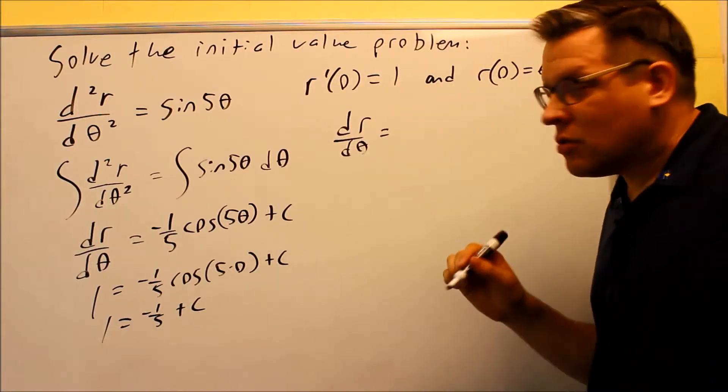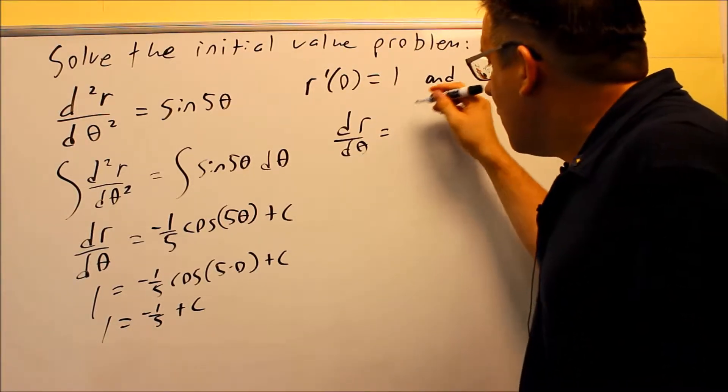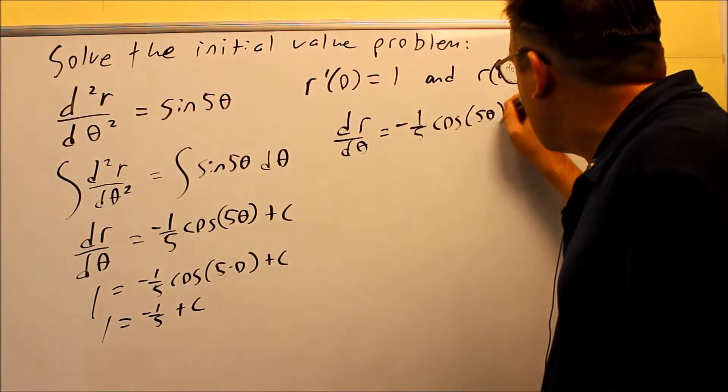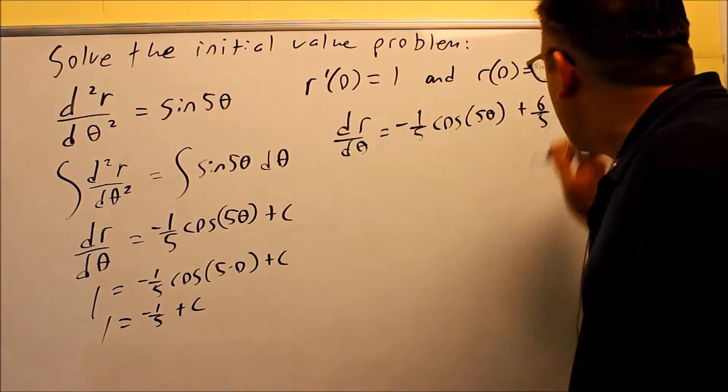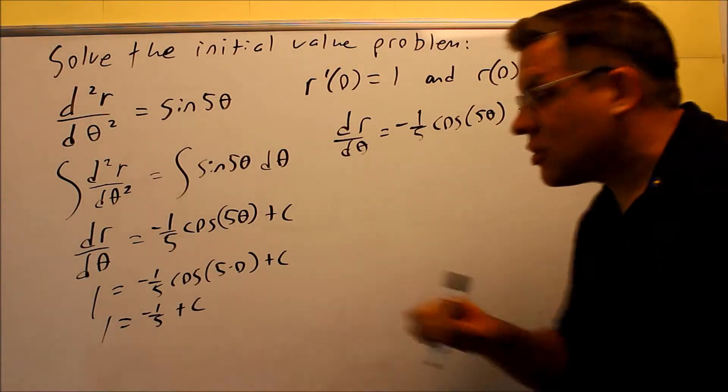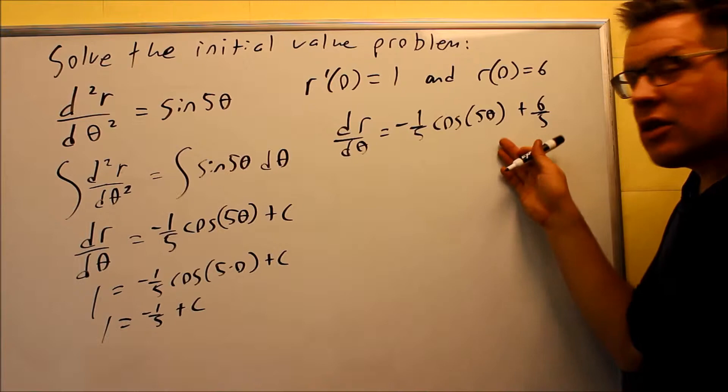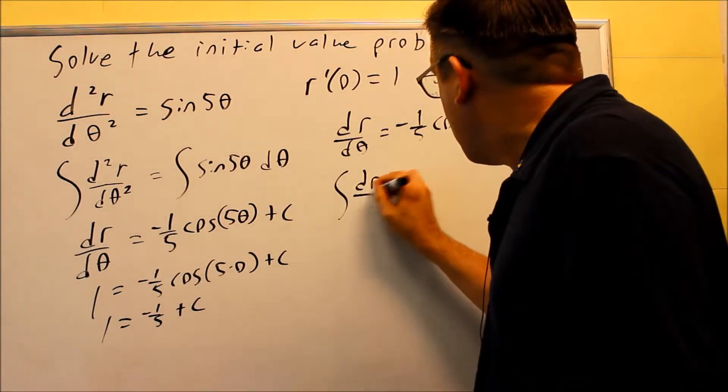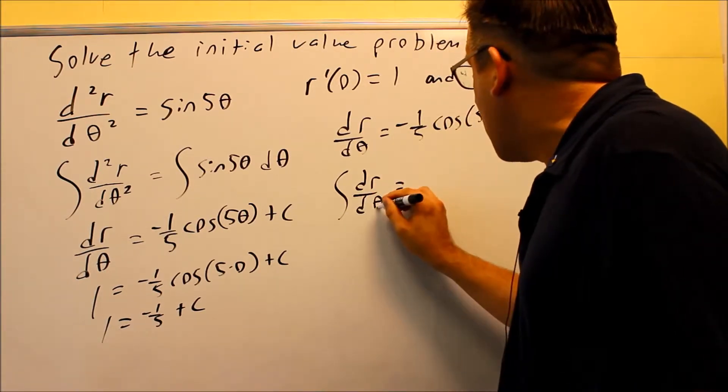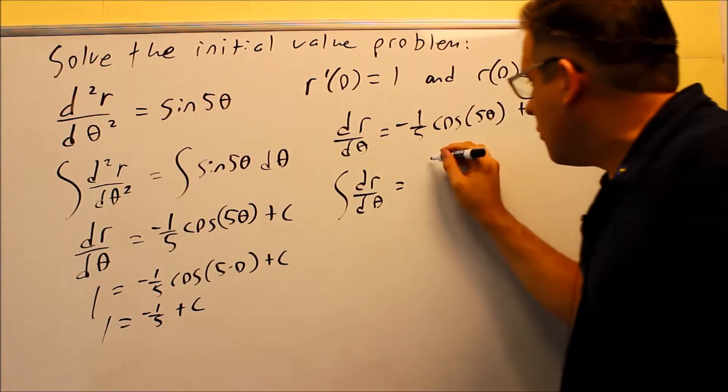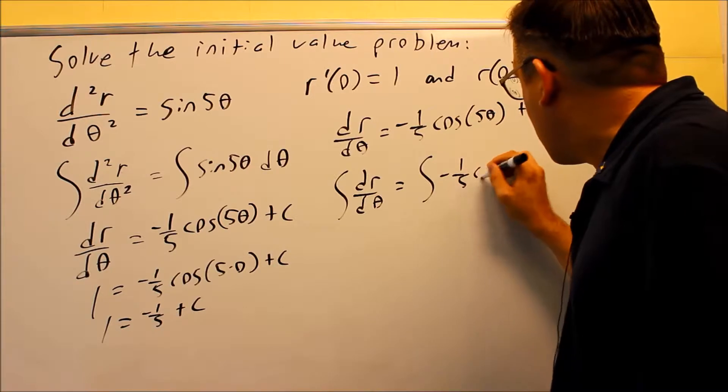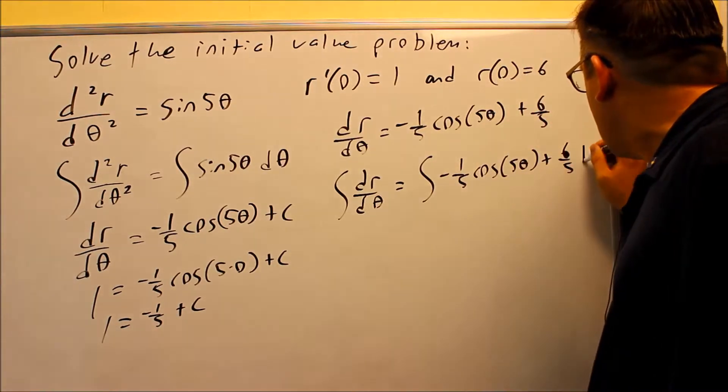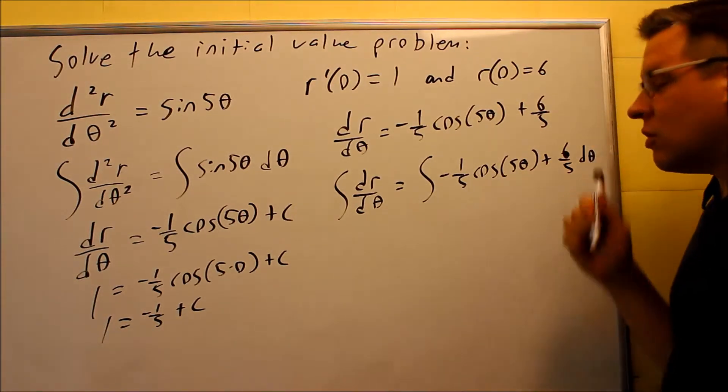So we know that when we rewrite this, now I can get my exact first derivative solution. It's going to be negative 1/5 cosine of 5θ, and then plus 6/5 that we got from solving this for c. We got the first derivative. We're going to integrate both sides. So we're going to take the anti-derivative, and that's going to allow us to get back to the original function. So negative 1/5 cosine of 5θ plus 6/5, and again, don't forget that there's dθ on the end over here.